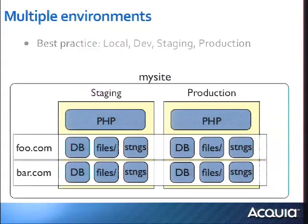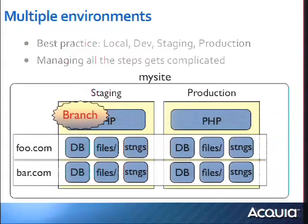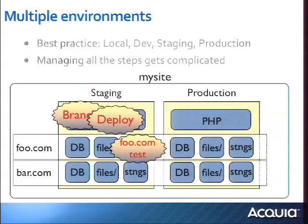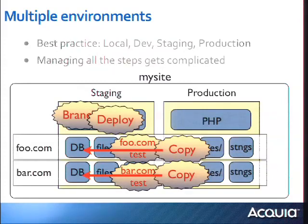Let's walk through working in a multiple environment system, pretending you only have two environments because that's what fits on the slide. You start with your development main branch — trunk or master depending on what you're using — and you create a branch to push into your staging environment for testing. You branch your code and deploy it on your staging environment. After deploying the code, you need to make sure your settings files for foo.com and bar.com are pointing to the right database and files directory.